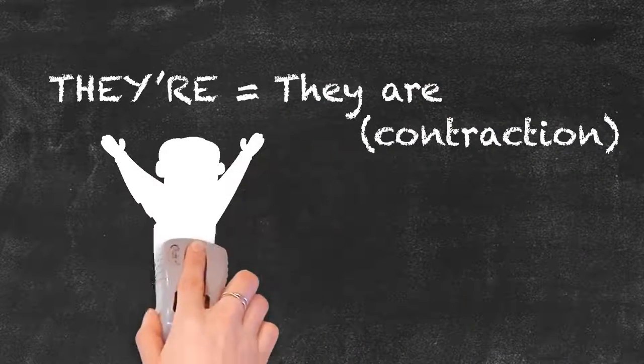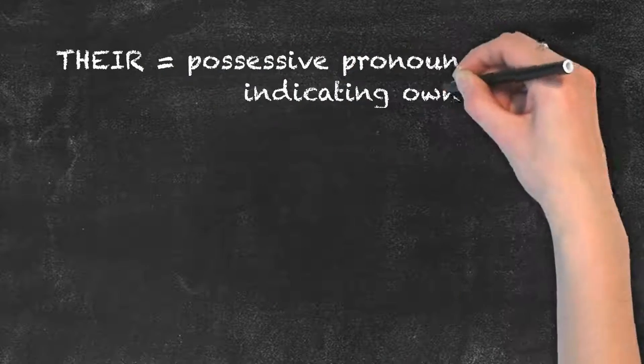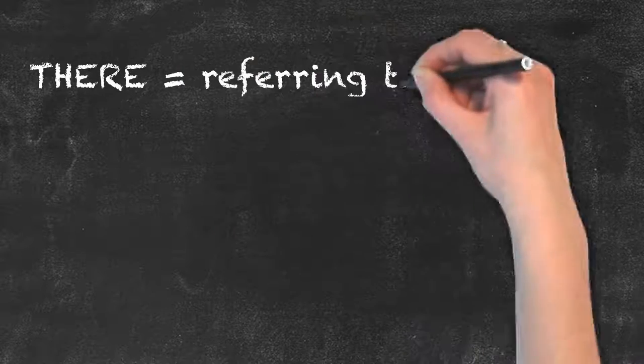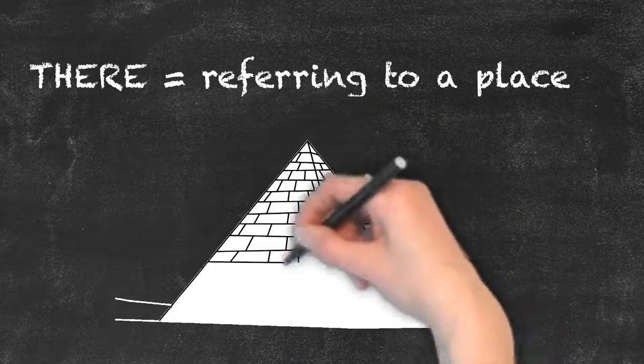They're simply is the contraction for they are. Their is a possessive pronoun and refers to something that is owned by a group. There simply refers to a place.